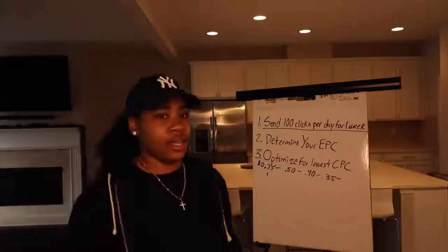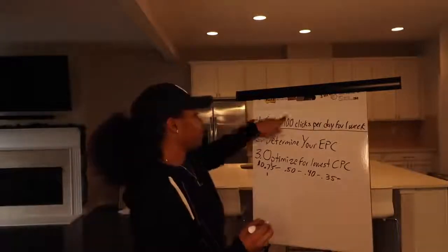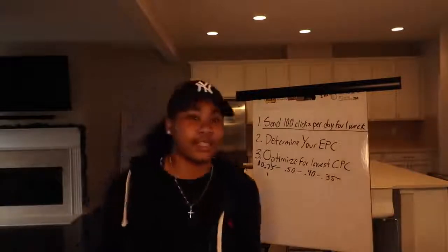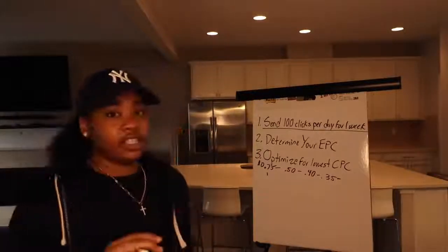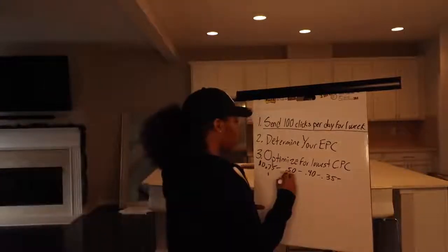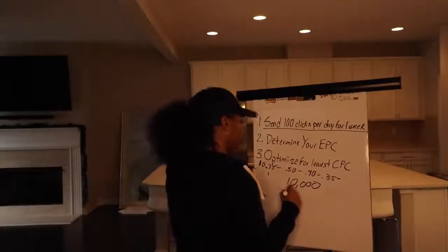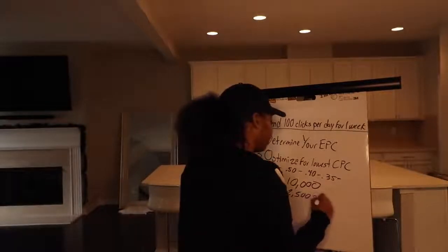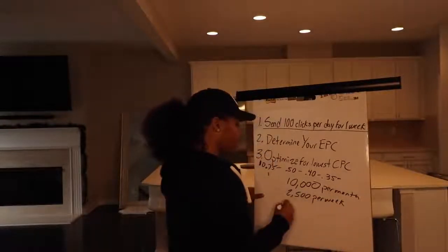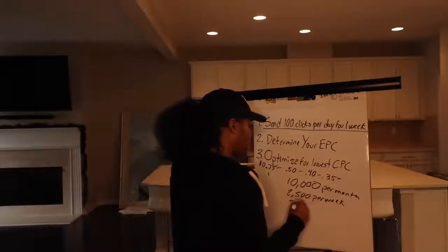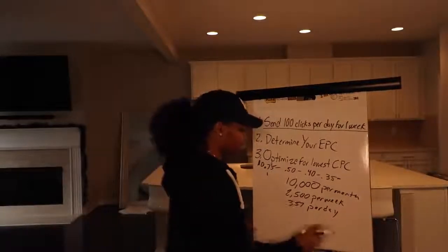I want to go through an example of what $10,000 a month might look like with CPA marketing. If you want to make $10,000 a month, I say send thousands of clicks a day — that's what I actually do. But if you're just getting started, aim for 10,000 clicks per month. That averages out to 2,500 clicks per week, and about 357 clicks per day. So the ultimate goal is to be sending about 300-plus clicks a day.